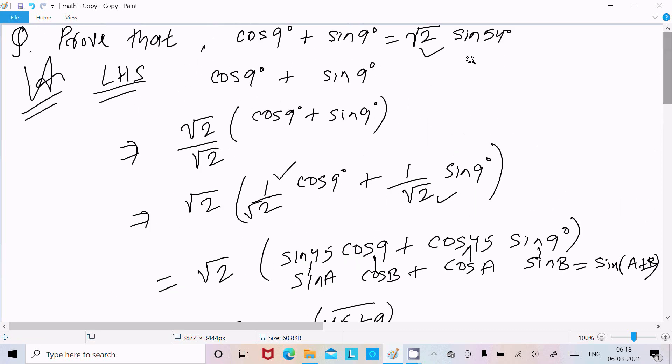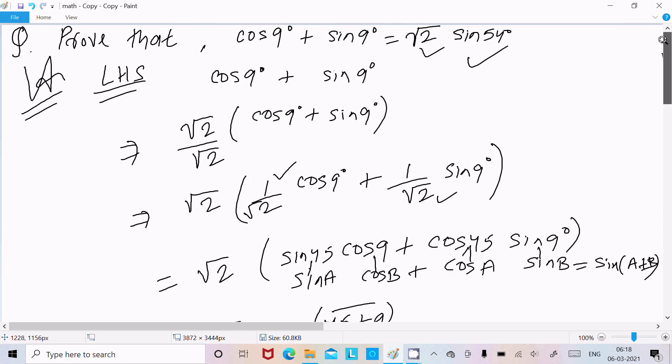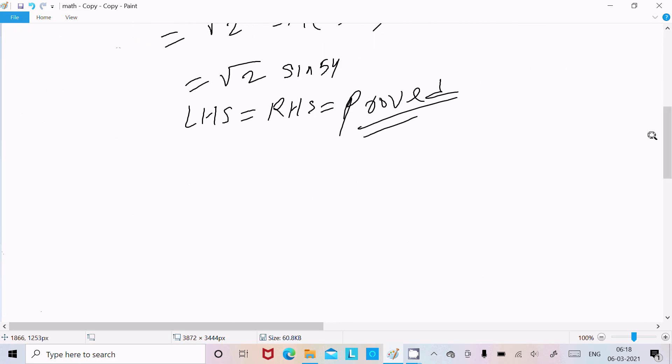So 54, that comes. Now here it's proved, LHS = RHS proved. So this term I used here, RHS. Now let's take RHS.